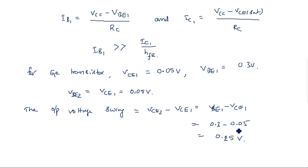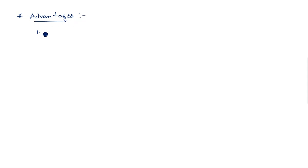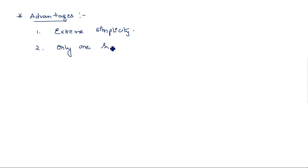Even though it has some advantages, there are many serious disadvantages for the direct connected binary, which is why these circuits are not preferred. The advantages are: first, extreme simplicity. Second, only one supply voltage of low value, about 1.5 volts, is required.